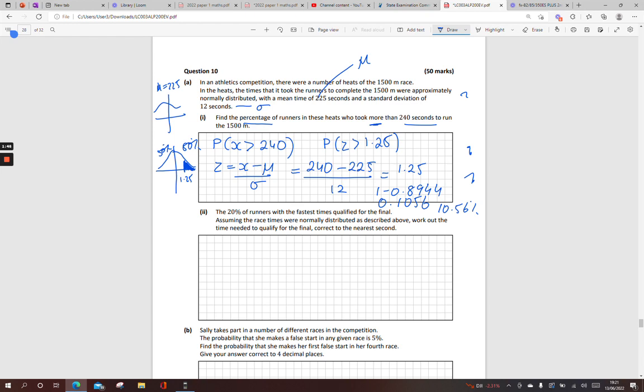Next thing, the 20% of runners with the fastest times qualified for the final. Assuming the race times are normally distributed once again, work out the time needed to qualify for the final. Now keep in mind this is a race. So it says the fastest 20%. It's not the tallest or the heaviest or the smartest. It's the fastest. So the fastest is the smallest value. So I'm down here on the left-hand side. I'm going to have a negative Z score. So 20% down there, 80% up here. And my answer has to be smaller than 225, which was my mean.